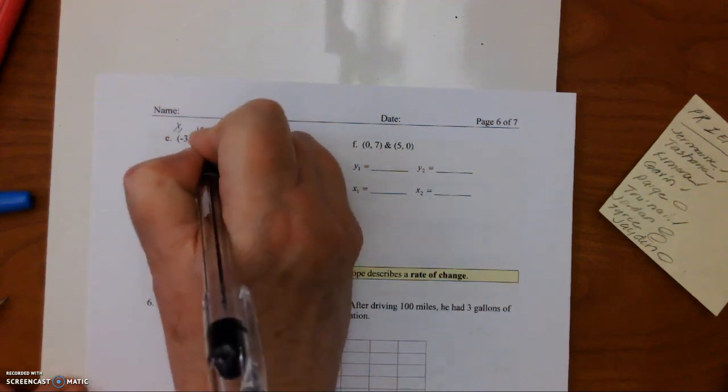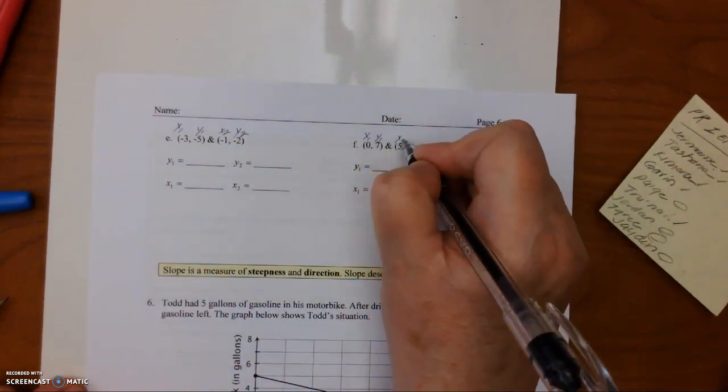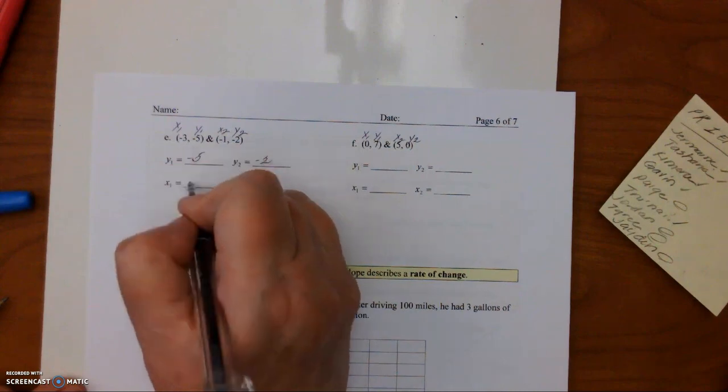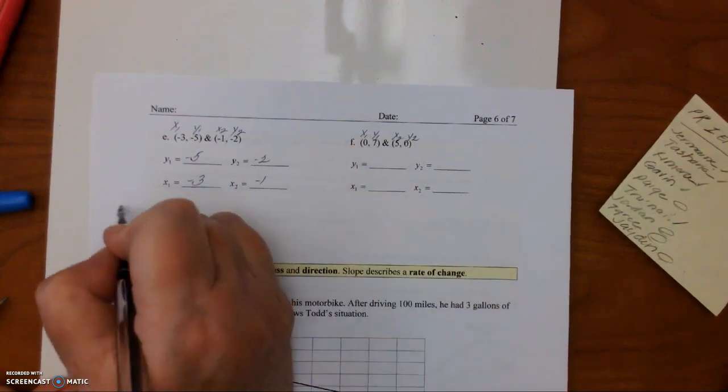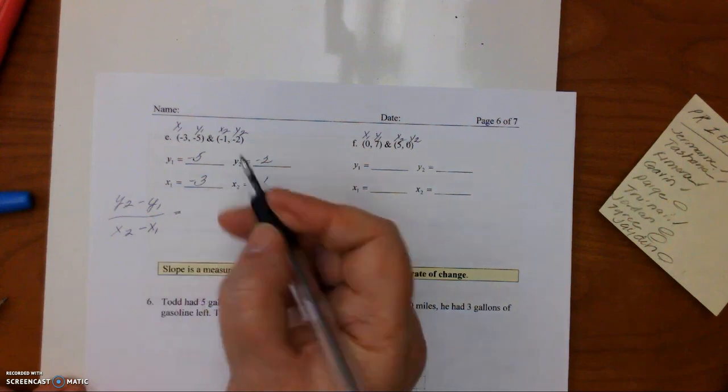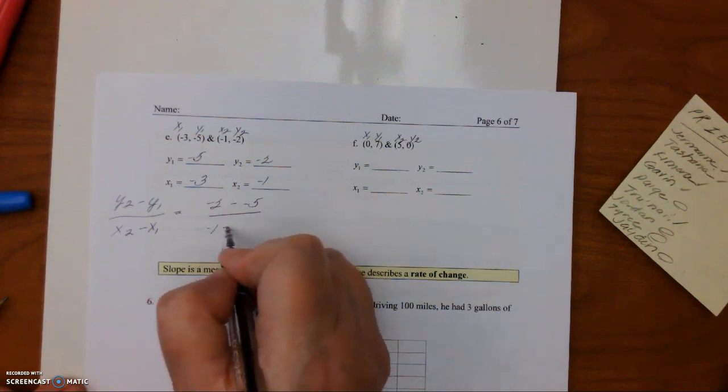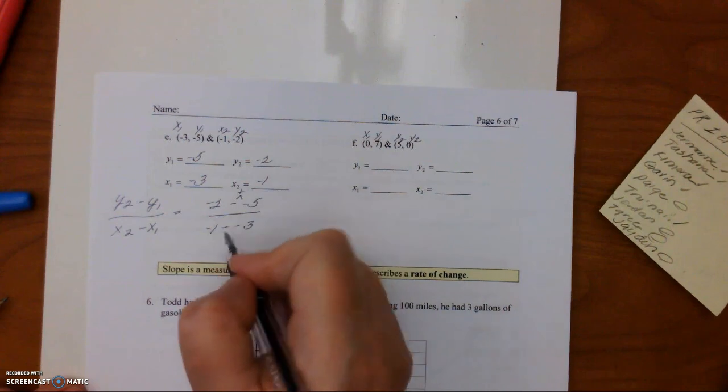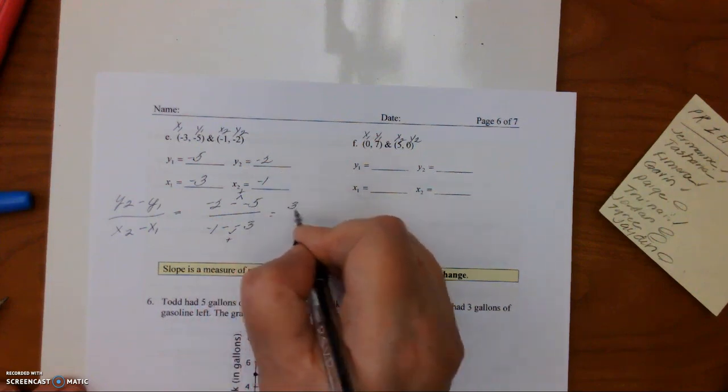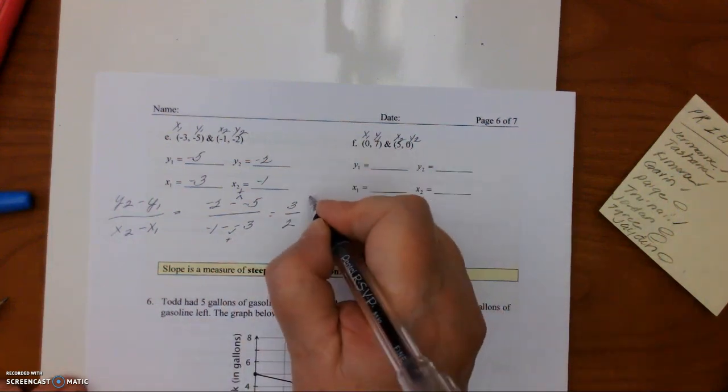So again, x1, y1, x2, y2. So y1 is negative 5, y2 is negative 2, x1 is negative 3, x2 is negative 1. So (y2 minus y1) over (x2 minus x1) equals negative 2 minus negative 5. Then we have negative 1 minus negative 3. This becomes a positive when you have these two together. So when we have negative 2 plus 5, it becomes 3 over negative 1 plus 3, which becomes 2. So we go up 3 over 2.